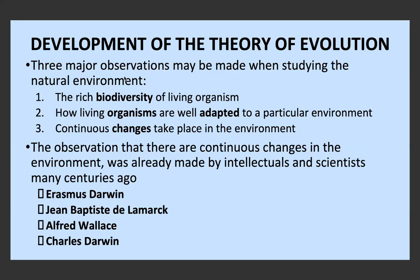The development of the theory of evolution involves three major observations made when studying the natural environment. The first is the rich biodiversity of living organisms — the wide amount of diversity and variation from unicellular prokaryotes to animals, plants, fungi, and so on. The second is how living organisms are so well adapted to their particular environment. And the third is that there are continuous changes taking place in the environment.